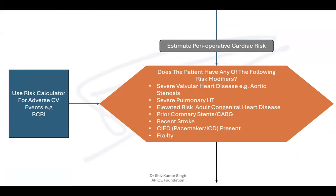If no acute symptoms are present, we estimate the perioperative cardiac risk using risk calculators for adverse cardiovascular events. We typically use the Revised Cardiac Risk Index, the RCRI. We also need to look at risk modifiers — these are not risk factors but modifiers — such as severe valvular heart disease, aortic stenosis, severe pulmonary hypertension, elevated risk of coronary heart disease whether operated or not, prior CABG, recent stroke, or presence of a pacemaker or ICD.